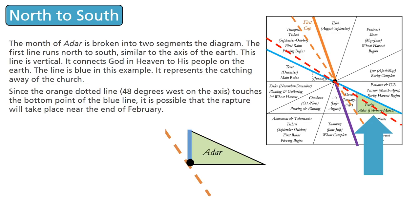The month of Adar is broken into two segments in the diagram. The first line runs north to south, similar to the axis of the earth — it is vertical and connects God and heaven to his people on the earth. This line is blue in this example and represents the catching away of the church. Since the orange dotted line at 48 degrees west on the axis touches the bottom point of the blue line, it is possible that the rapture will take place near the end of February.